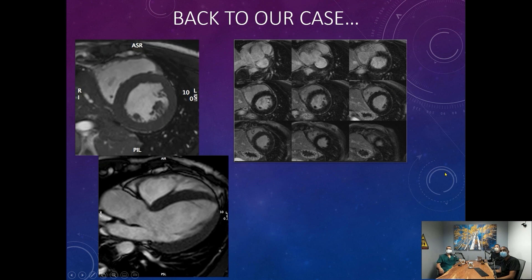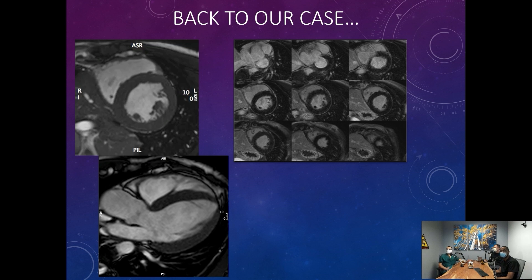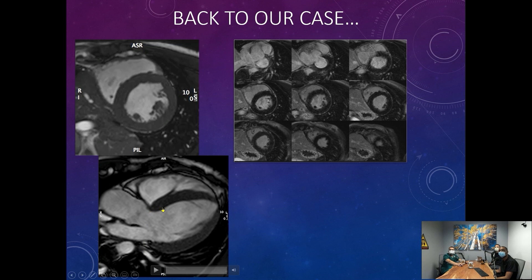Returning to our young man — we administered gadolinium and found that in the LGE sequences there wasn't much to write home about. Maybe a slight signal at the septum, so we haven't quite ruled out HCM. Another thing I look at: in genetic hypertrophic cardiomyopathy the hypertrophy tends to be a little more asymmetric, whereas here it's fairly symmetrical. We can also look at septal curvature — here it's concave, curving outward, whereas in genetic HCM it tends to be convex and bulge inward.